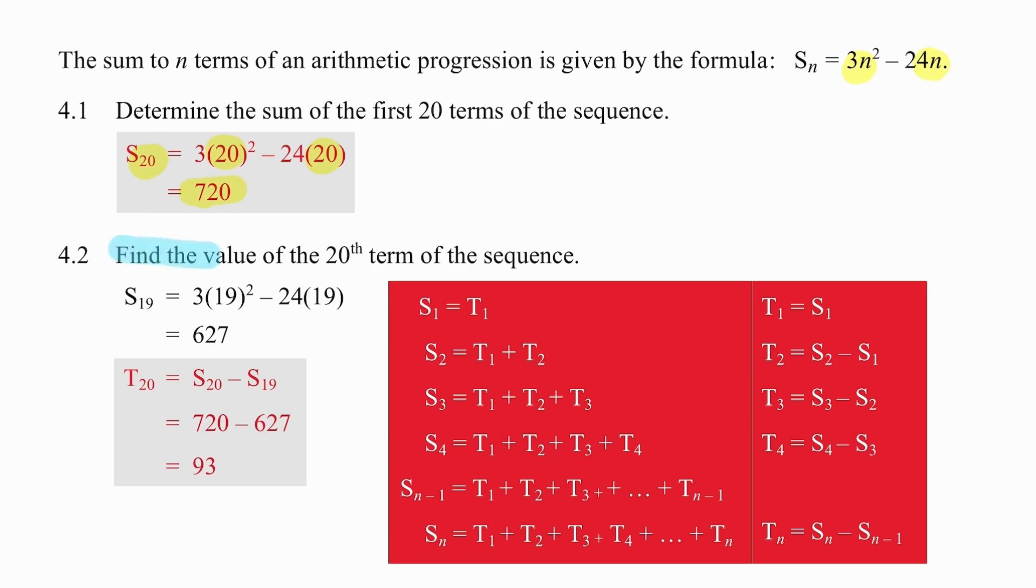The second question is a lot more complicated. Work out the value of the 20th term of the sequence. Now we don't have A, we don't have D, and we don't have the value of a term in the sequence, so the question feels a little impossible. But if you look at the table that I've created for you, you don't create this in an exam, it takes too long, but it's critical that you understand this.